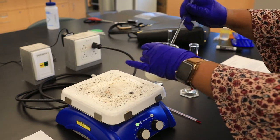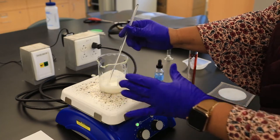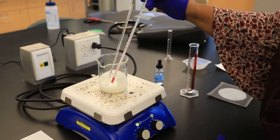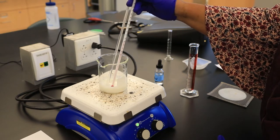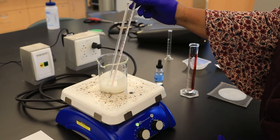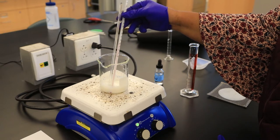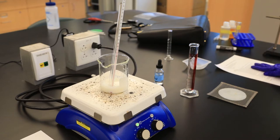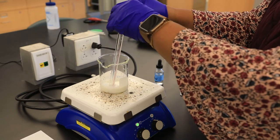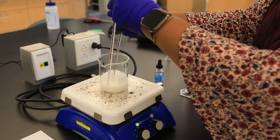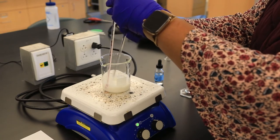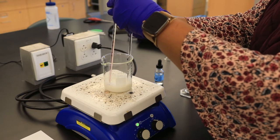We're going to transfer our beaker to the hot plate and monitor the temperature using our thermometer. Maintaining the temperature is extremely important in this experiment to avoid denaturing our protein. We want to make sure this temperature does not go above 45 degrees Celsius. While it's heated, we also want to continue stirring on and off to make sure the dry milk dissolves.